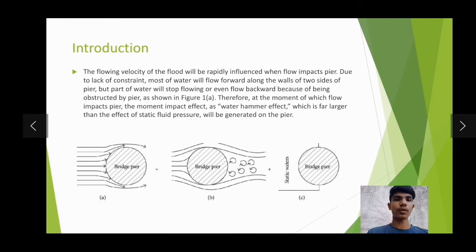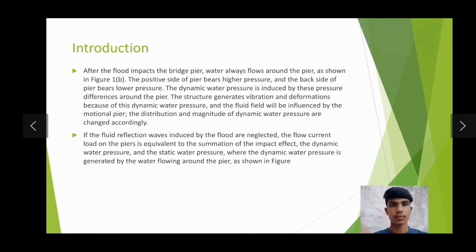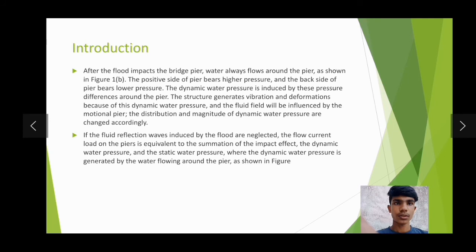Most water will flow forward along the walls on two sides of the pier, but part of the water will be stopped or even flow backward because of being obstructed by the pier, as shown in Figure A. Therefore, at the moment of impact, a water hammer effect — far larger than the effect of static fluid pressure — will be generated on the pier. After the fluid impacts the bridge pier, water always flows around the pier as shown in Figure B. The positive side of the pier bears higher pressure and the back side bears lower pressure. The dynamic water pressure is induced by this pressure difference around the pier.